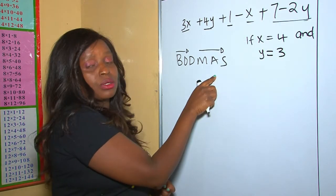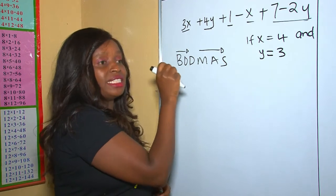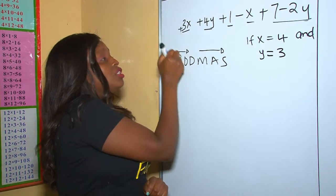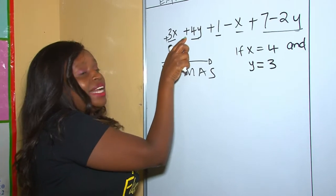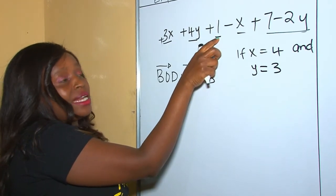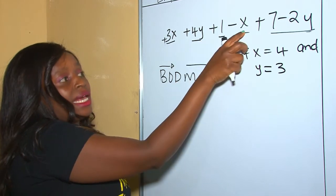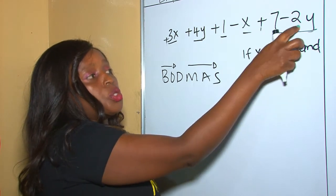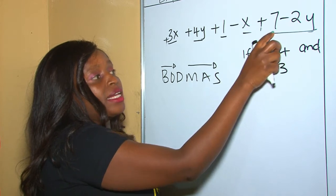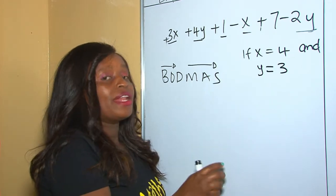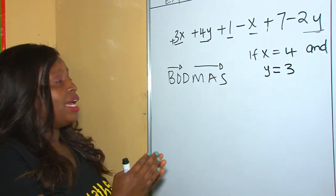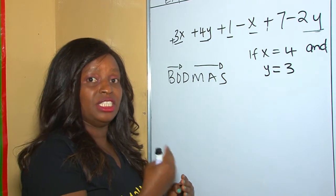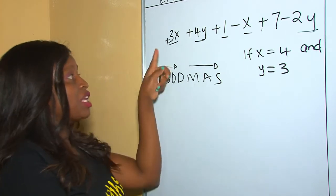Considering the BODMAS rule, you check the sign behind each term. For instance, 3x — the sign behind it is addition. 4y — the sign behind it is addition. The sign behind 1 is addition. The sign behind x is subtraction. The sign behind 7 is addition. The sign behind 2y is subtraction. Therefore, now we are putting like terms together: x and x, y and y, and numbers and numbers, considering the sign behind each term.